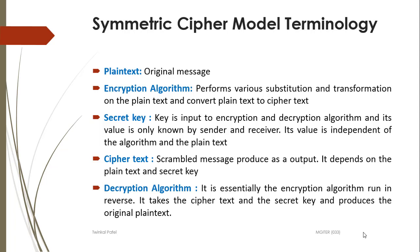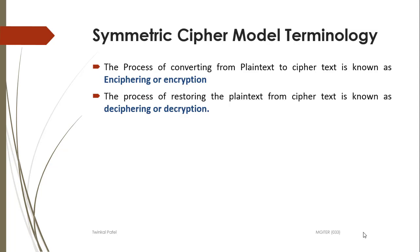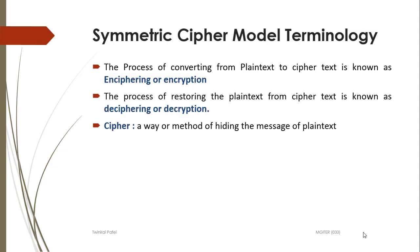Decryption algorithm is the reverse of the encryption algorithm; it takes the ciphertext and the secret key as input and produces the original plaintext. The process of converting plaintext to ciphertext is known as enciphering or encryption, and the process of restoring the plaintext from the ciphertext is known as deciphering or decryption. Cipher is a way or method of hiding the message of plaintext, and different ciphers are available in cryptography.